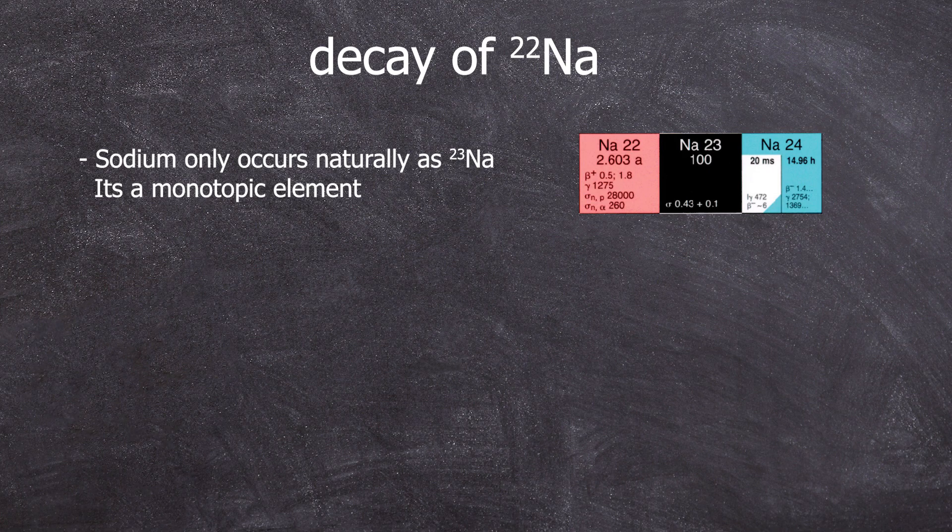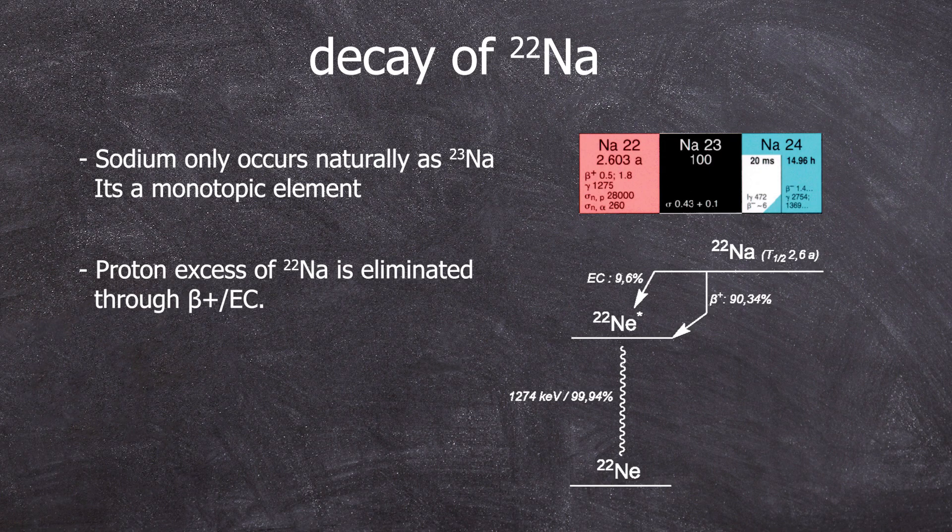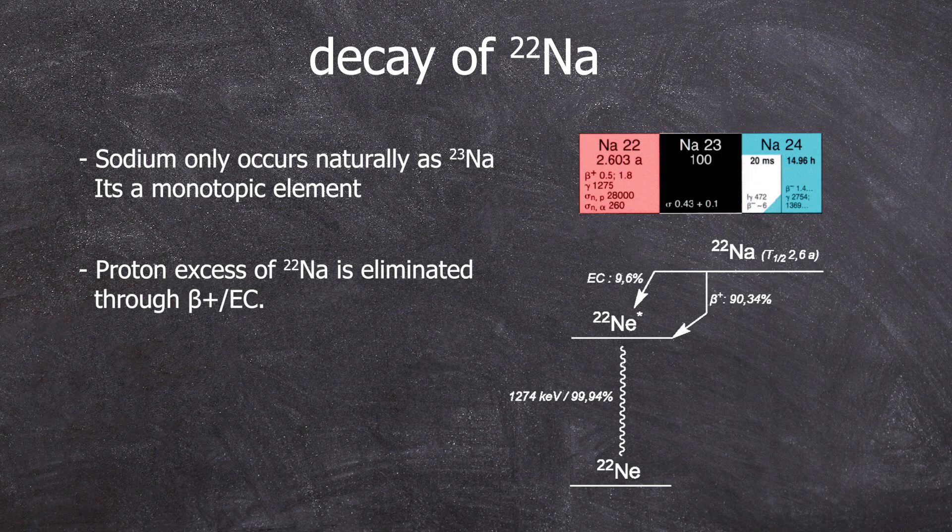In the beta-plus decay, one of these protons is converted into a neutron, transforming sodium-22 into neon-22 and emitting a positron. The positron is the antimatter counterpart to the electron.